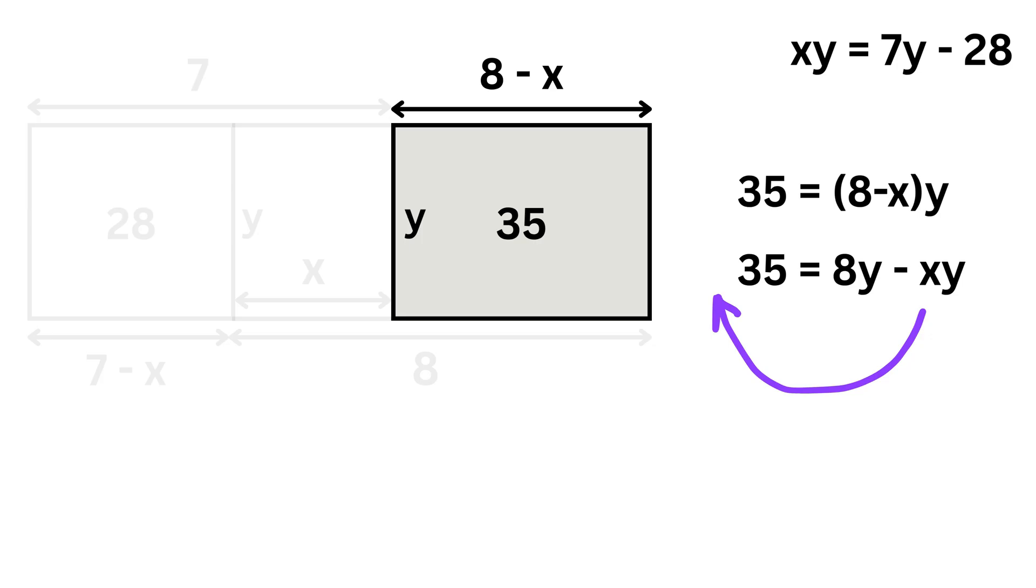Let's move the negative xy to the left-hand side and 35 to the right-hand side. That gives us xy equals 8y minus 35. This will be our second equation.